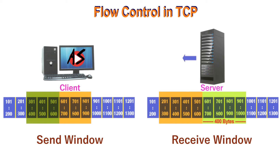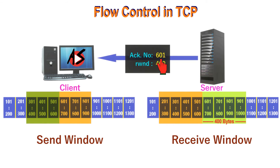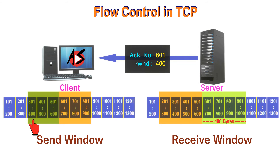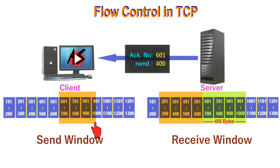In segment 7, the server acknowledges receipt of data with acknowledgement number 601 and announces its window size is 400 bytes. When this segment arrives at the client, the client reduces its window size to 400 as advertised by the server. The send window closes from the left by 300 bytes since that data has been acknowledged, and opens from the right by 100 bytes.